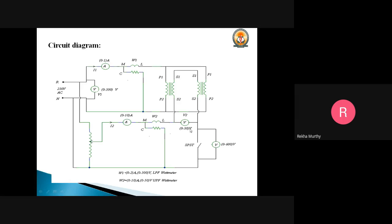The voltmeter of range 0 to 600 volts is connected here. An SPST switch is connected in between. When the SPST switch is open, the open circuit test is conducted to find the core loss. When the SPST switch is closed, the short circuit test is conducted. We also need to connect a voltmeter across the SPST switch. The primary of the second transformer is also connected back to back — P1 and P2 are connected back to back. We need to combine the two circuits, that is the OC test and short circuit test circuits.